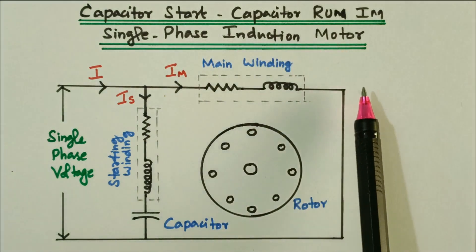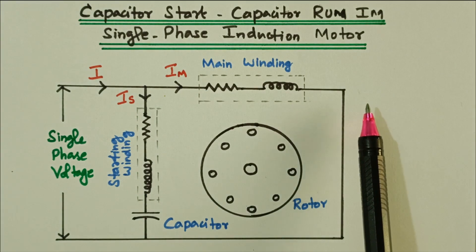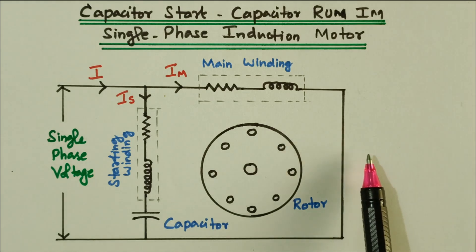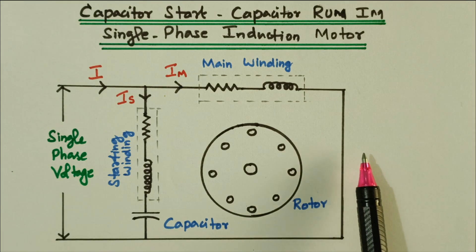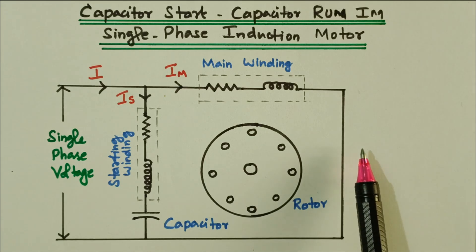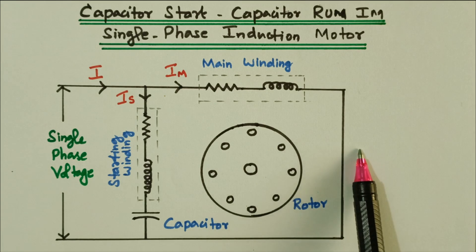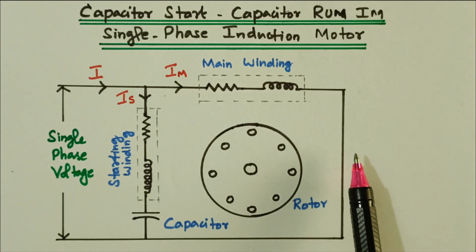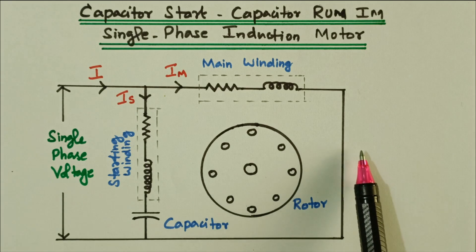We know that a single phase induction motor is not a self-starting motor. In order to make it self-starting, the single phase is converted into two phases. There are two windings and we need to make it two phases. Also, the current flowing through these two phases should have a phase difference — then only the revolving magnetic field will be created.